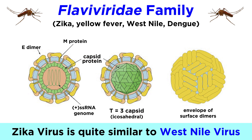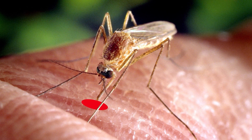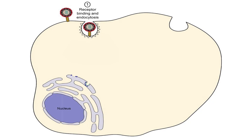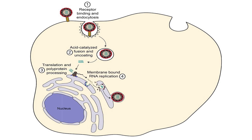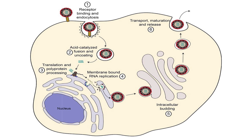When we covered West Nile, we learned the details of how flaviviruses replicate and cause disease during an infection, which are essentially the same here. In the case of Zika, after the bite of an infected mosquito, proteins on the surface of the virus attach to a host cell membrane. The virus gets taken into the host cell by endocytosis, the capsid is broken apart in the cytoplasm to release viral RNA, and the host cell creates more copies of the virus, which get released to infect more cells.